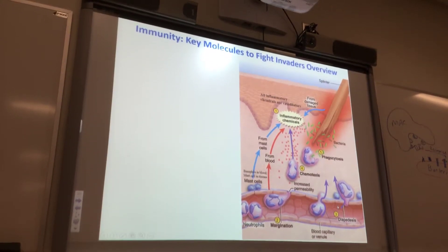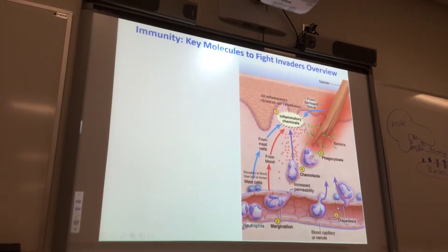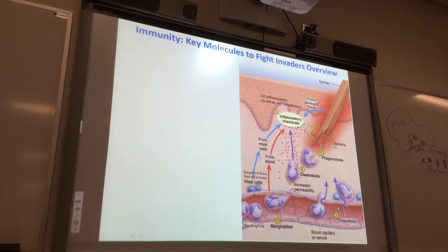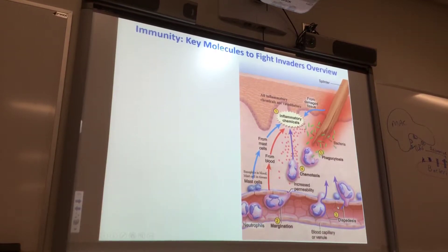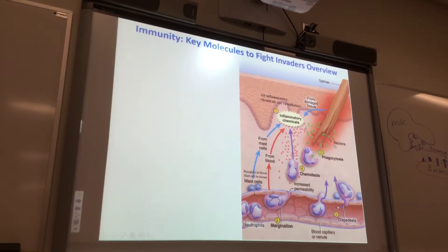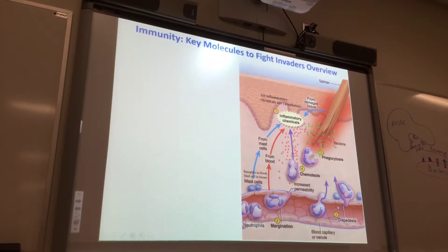Specifically, they are epithelial cells, but specifically what part of the integument is this? The epidermis. And then this tan stuff under here is the dermis.